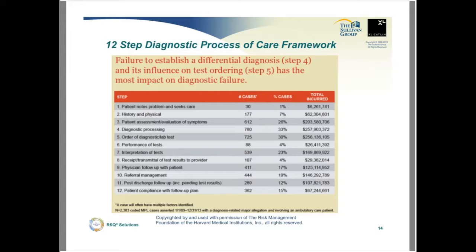Let me give you an example. Take a patient with chest pain who seeks care in the emergency department or primary care. History and exam are performed, but if the symptoms and risk factors are not thoroughly evaluated — say, for something like pulmonary embolism — then the differential diagnosis won't even include a pulmonary embolism. As a result, the proper diagnostic test won't be ordered, and the correct diagnosis will be missed. You can see how an error in one area can really compound. It's within this framework that errors and claims can be analyzed for causes, trends, and potential solutions.